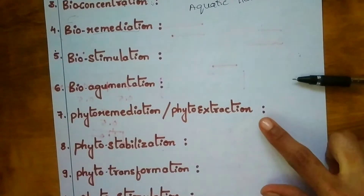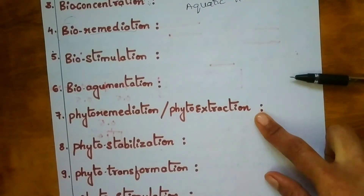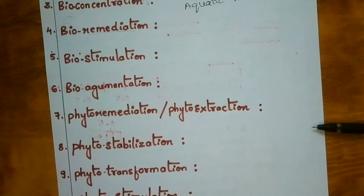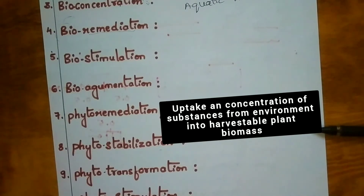Moving on to phytoremediation, also called phytoextraction. Phytoextraction means uptake and concentration of substances from the environment into harvestable plant biomass. For example, if you grow a plant and harvest it, you are indirectly removing the toxic substances absorbed by that plant from the environment.